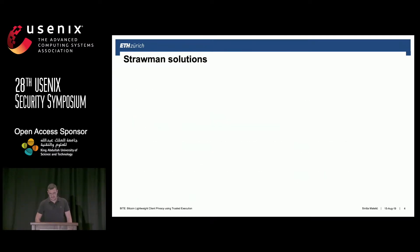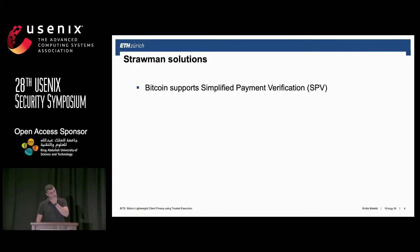To address this concern, the original Bitcoin paper also proposed a solution called Simplified Payment Verification. In this technique, the light clients store only the block headers, check their proof-of-work puzzles, and then request their own transactions and the Merkle paths they need to verify their presence in the blocks from a full node that stores the entire chain.